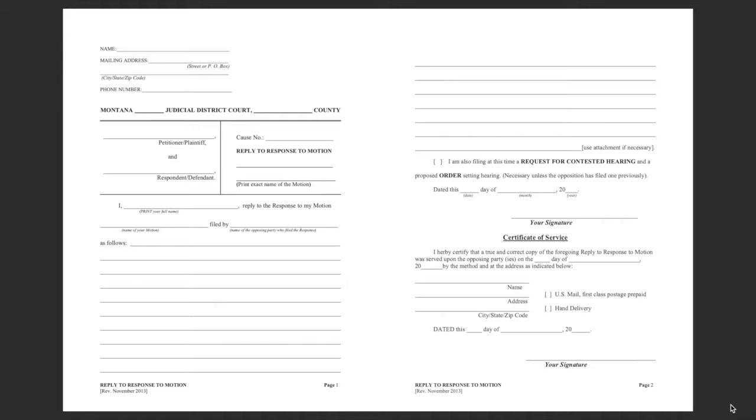If the other party files a response to your motion, you have the option of filing the reply to response to motion form in this packet if you think it is necessary. This is your opportunity to respond to the opposing party's response to your motion. Your reply must be filed within 14 days if the response was hand-delivered to you, or within 17 days if the response was mailed to you. A reply cannot raise new facts that were not previously discussed by one of the parties, and you cannot file another affidavit in support of your motion. The reply should contain only your response to the arguments raised by the opposing party in their response, and should not contain completely new arguments. You must serve a copy of the reply on the opposing party.